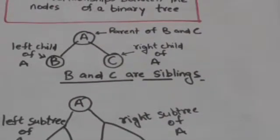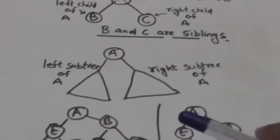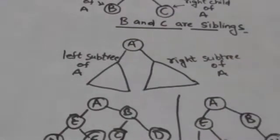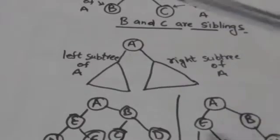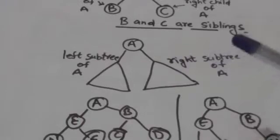Suppose there is a node A in a binary tree. Then any node N which belongs to its left subtree or its right subtree is called descendant of node A, and node A is called ancestor of node N.